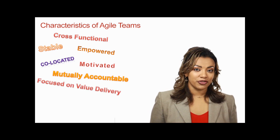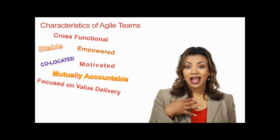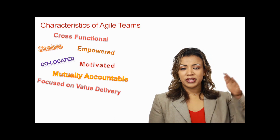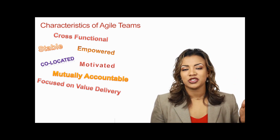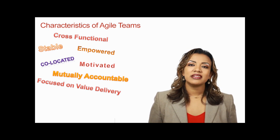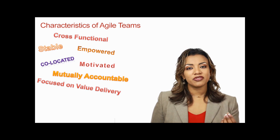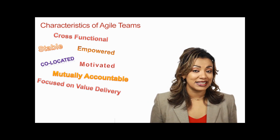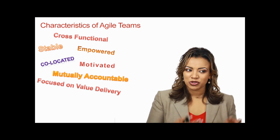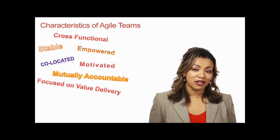Agile Teams are focused on value delivery, which means instead of focusing on getting individual tasks done — a developer checking off a list of tasks, a tester running test scripts, or a business analyst completing requirements — it's more about: what is the valuable story, the business deliverable, that we committed to getting done as a team? Are we focusing on that, as opposed to just our individual part of it? Very much value delivery focused.